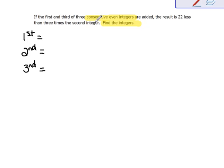Consecutive means that they are right in a row. So if I were to give an example of three consecutive even integers, it would be something like two, four, six, or maybe ten, twelve, fourteen. Those would be examples of three consecutive even integers.